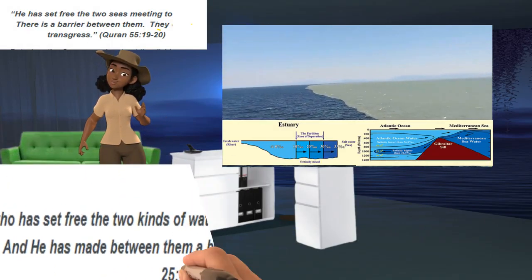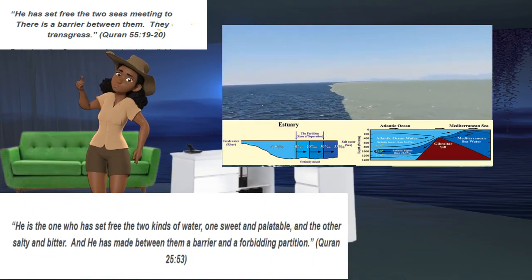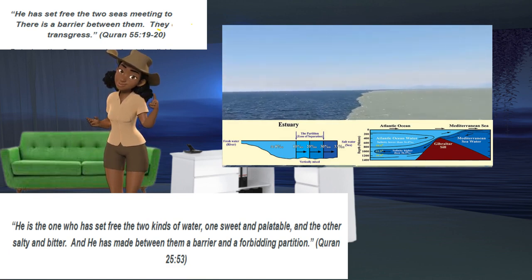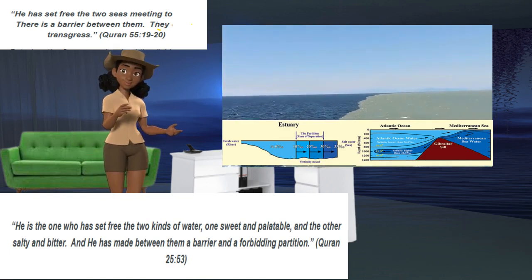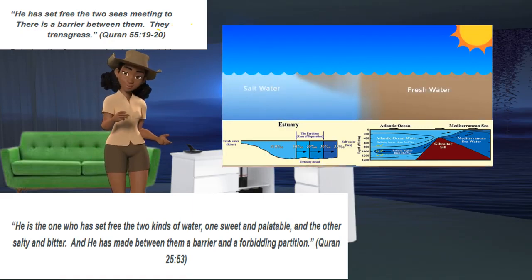But when the Quran speaks about the divider between fresh and salt water, it mentions the existence of a forbidding partition with the barrier. God has said in the Quran, He is the one who has set free the two kinds of water, one sweet and palatable, and the other salty and bitter. And He has made between them a barrier and a forbidding partition. Quran 25-53.